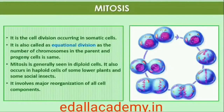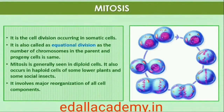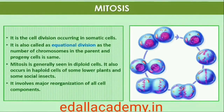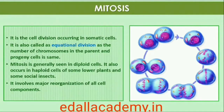In animals, mitotic cell division is only seen in the diploid somatic cells. In contrast, plants can show mitotic divisions in both haploid and diploid cells. From your recollection of examples of alternation of generations in plants, identify plant species and stages at which mitosis is seen in haploid cells.